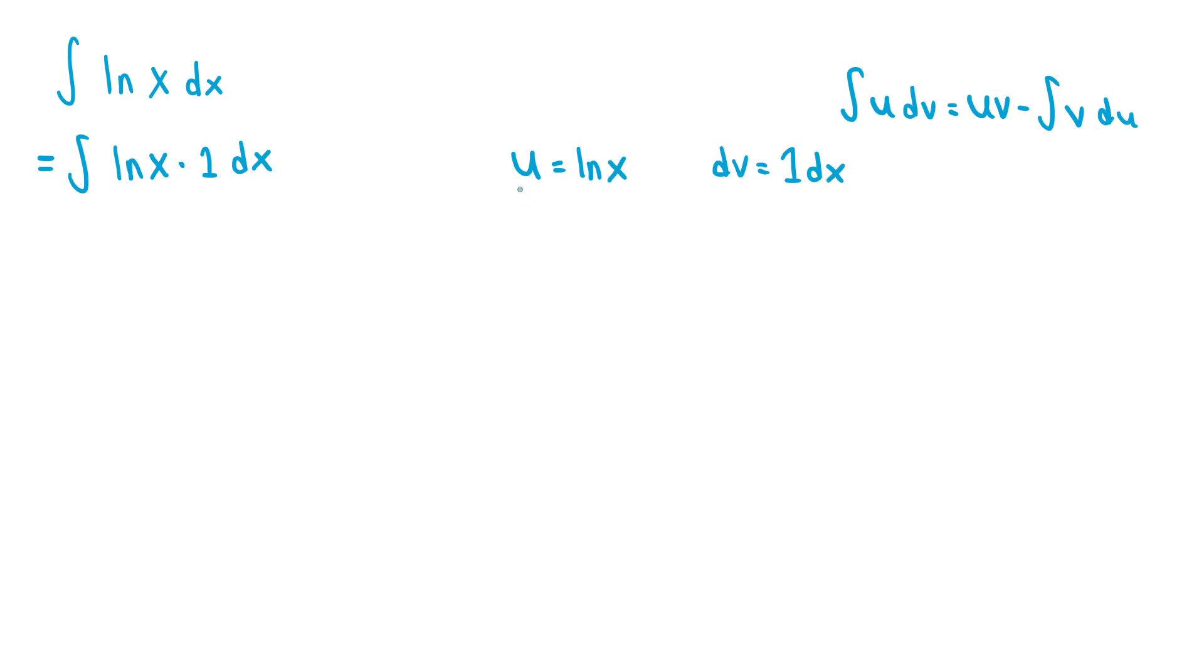So this means we need to differentiate the u to get our du. So du is just equal to 1 over x dx, and we need to integrate dv to get the v. So the integral of 1 is equal to x, so v is just equal to x.